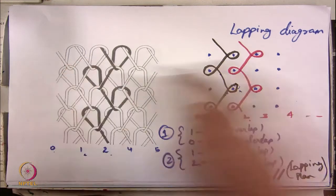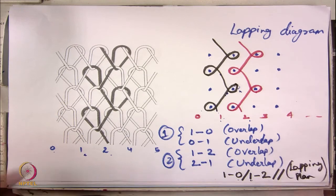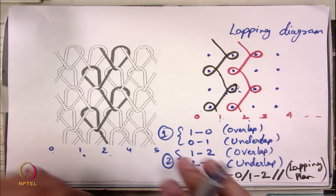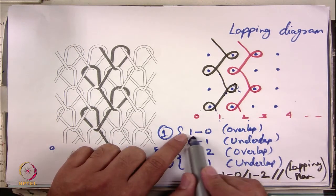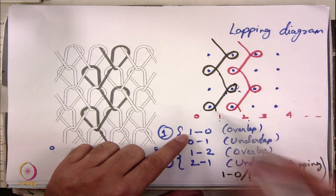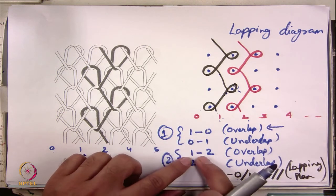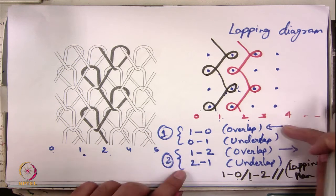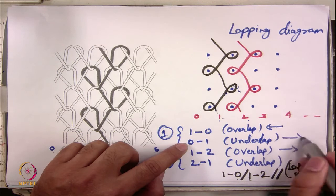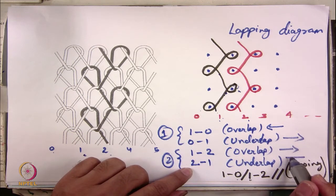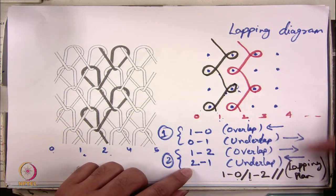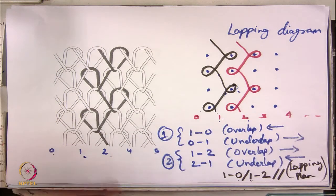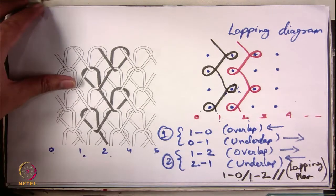This whole fabric can be represented either by the lapping diagram or the lapping plan. In research papers or in practice, you will use either one. One more interesting observation: in this example, overlap 1 to 0 goes left to right, while overlap 1 to 2 goes right. So in alternating courses, the direction of overlap is different. Similarly, the underlap directions are different in alternating courses. And in the same course, the direction of overlap and underlap are opposite.